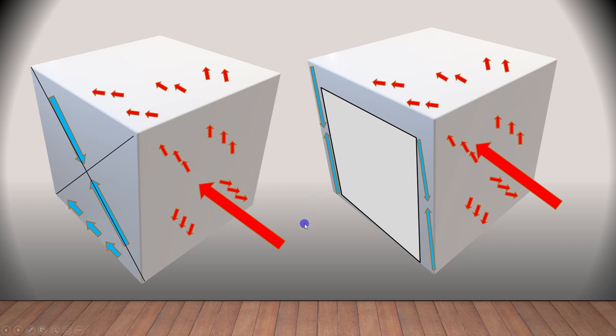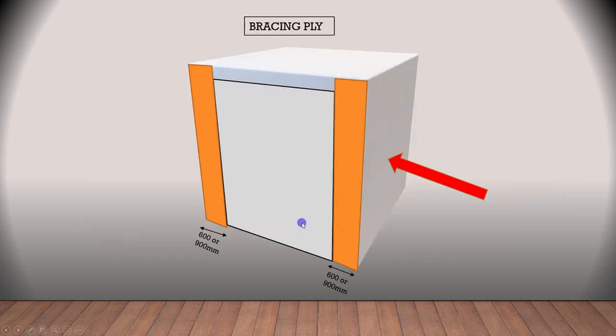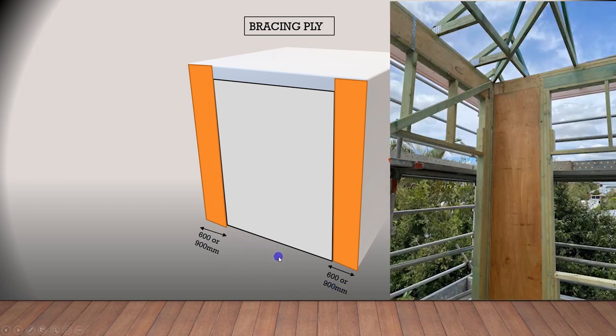So how can we deal with this type of problem? We've got a couple of solutions. The first one, if you can leave between 600 or 900 millimeters of wall, you might get away with plywood bracing at both ends. These would be the cheapest options that you can provide to your client.